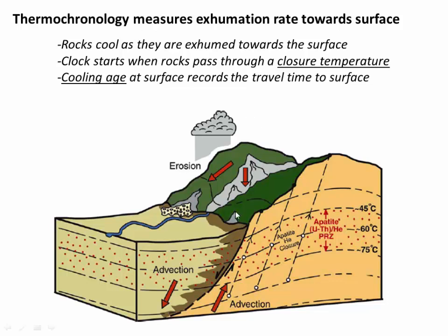If you imagine a mountain range with rocks underneath it, as material is eroded from the top of this mountain range by rivers, by landslides, or by glaciers, all of these erosive processes are essentially removing material from the top of the mountain range. That allows rocks at depth to move upward in a process called advection, or exhumation, over time. So essentially, we're taking stuff off the top, which is moving rocks upward from below.